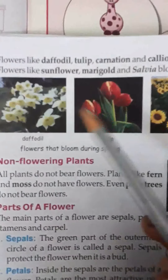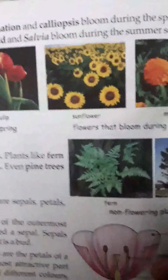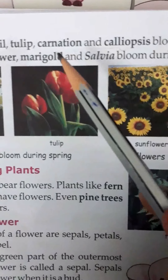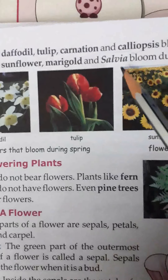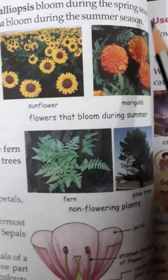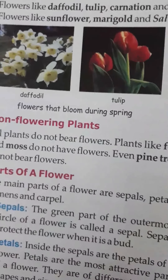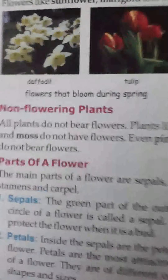Here are some flower pictures that bloom during spring season and some that bloom during summer. Here daffodil, tulip — carnation and calliopsis bloom during the spring season, and flowers like sunflower, marigold, and salvia bloom during the summer season. These are the flowers' names and these are seasonal flowers — some flowers bloom only in spring, some bloom only in winter, that is why they are called seasonal flowers.